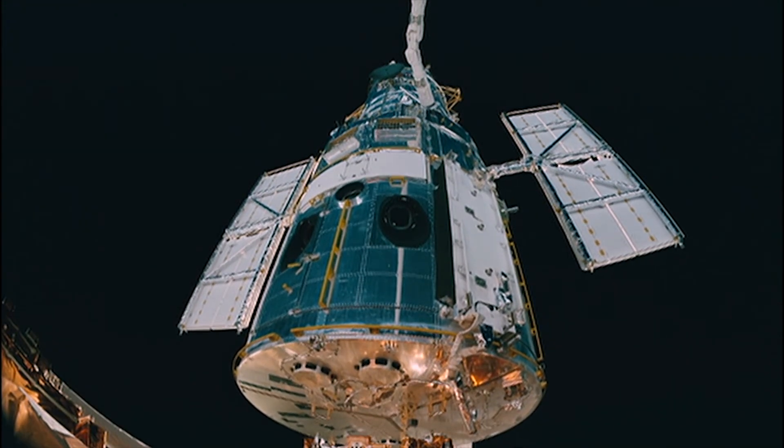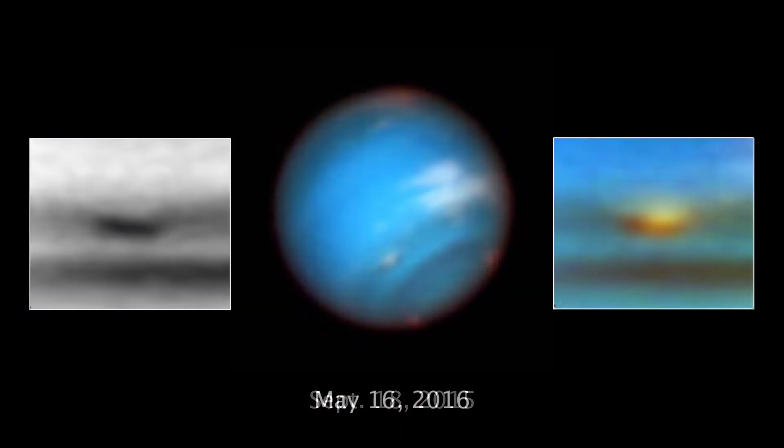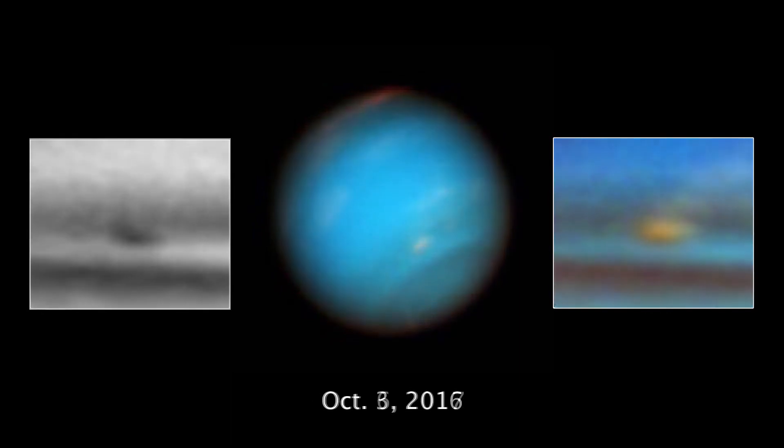NASA's Hubble Space Telescope has been watching a large dark storm on the planet Neptune disappear before our very eyes, or telescope mirror.